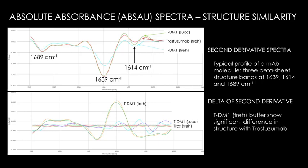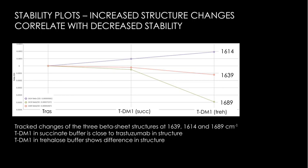Taking the delta of the second derivative really exaggerates these differences. The trastuzumab-DM1 in trehalose buffer shows a very high deviation at those beta-sheet wavelengths, suggesting a structural difference — most likely a change in the beta sheet within the antibody. In conclusion: the succinate buffer and original trastuzumab look very similar, but the trehalose-buffered DM1 has major deviations, indicating that buffer conditions are a key consideration for stability.